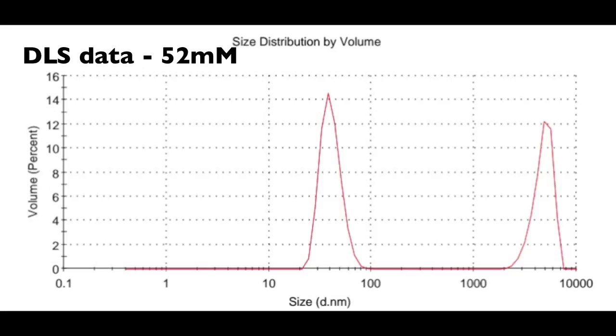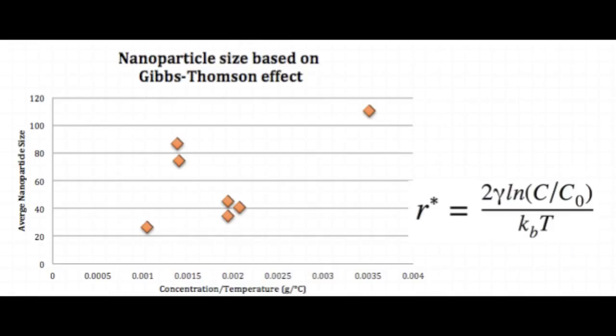Our solution was then analyzed using a Zetasizer to analyze the particle size. It gives you a distribution showing the normal particle size distribution based on volume, and for 52 millimolar this is around 47 nanometers, with the agglomerates showing there at the end. We then tried to relate this to the Gibbs-Thomson effect, correlating it with concentration and temperature, but this is a minimal data set that is not very conclusive.